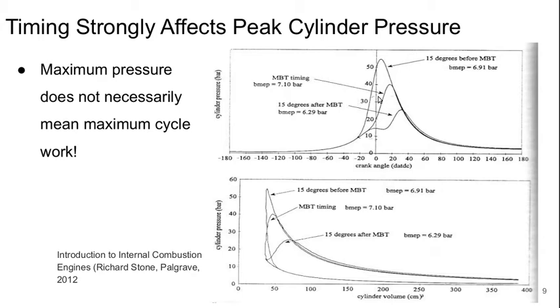So this MBT is basically the maximum cycle work, or mean effective pressure timing, and then this is 15 degrees after, 15 degrees before.